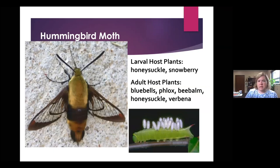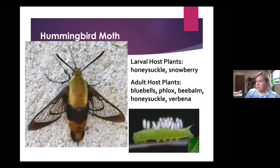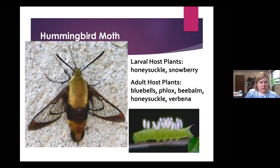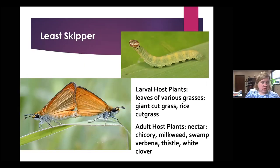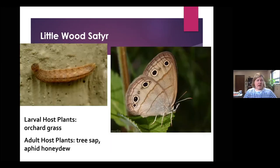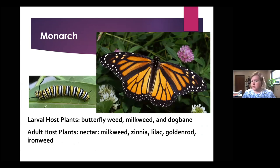This is actually a clearwing moth, which I had to include as part of the butterflies and moths discussion. You can see through the wings — it's a bee mimic that sounds like a bee and will hover in front of flowers. If you see a caterpillar covered with little white cocoons, those are pupating cocoons of a parasitic wasp and it won't turn into a butterfly. Here's a skipper. A little wood satyr — if you have orchard grass, the adults feed on tree sap and honeydew up in the trees. The monarch only feeds on butterfly milkweeds, dog-bane, and butterfly weed, and has no bar across the hind wings.